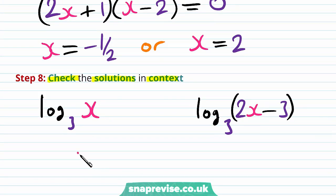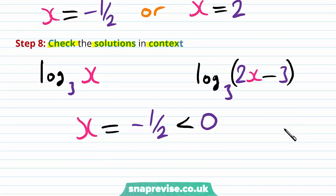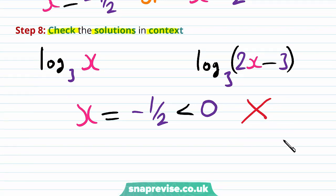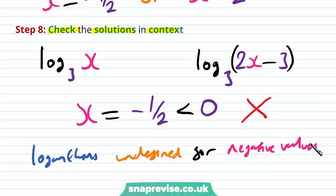Notice that if x is equal to minus 1 half, then this value itself is going to be negative. This therefore can't actually be a solution because logarithms are undefined for negative values. So in the equation, we would have a term that says log base 3 of minus 1 half, and this doesn't have any actual real value.